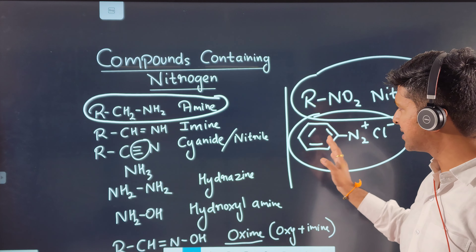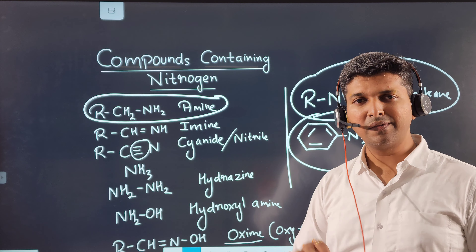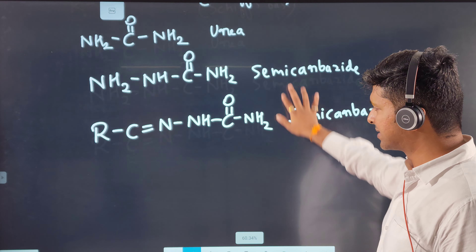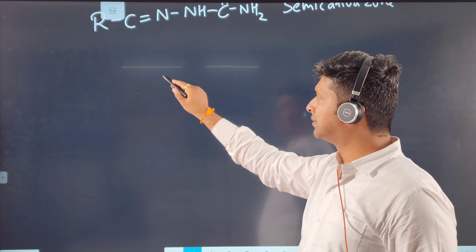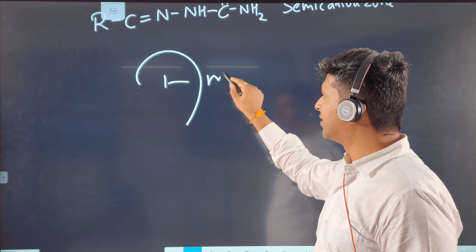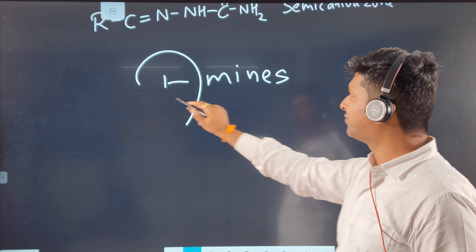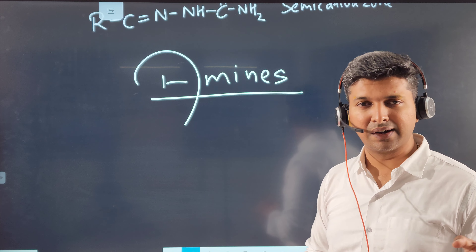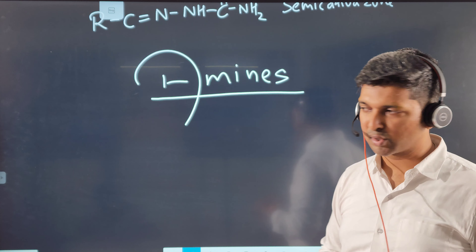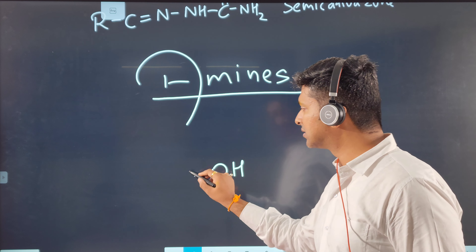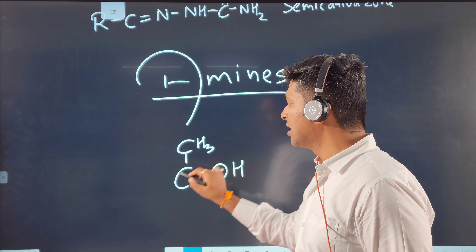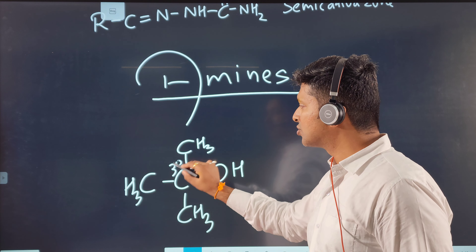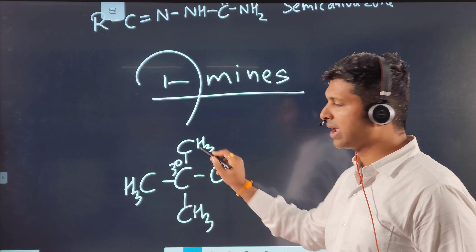We are going to begin with amines. Let's look at the nomenclature of amines. The nomenclature of amines is a little different from other organic functional groups. If I ask you to draw a tertiary alcohol, you would attach the OH group to a tertiary carbon — a carbon attached to three other carbons — and call it a tertiary alcohol.